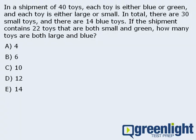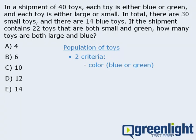To set things up, please consider this question. Here, we have a population of toys in which each toy has exactly two criteria associated with it. First, there's the toy's color, blue or green, and there's the toy's size, large or small. So this question is a great candidate for the double matrix method.